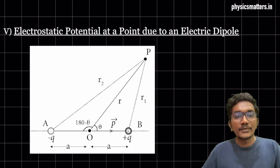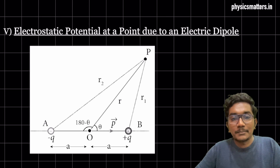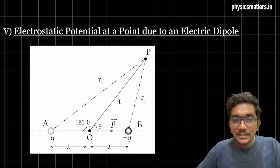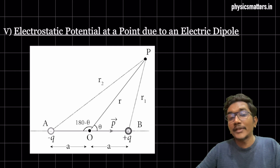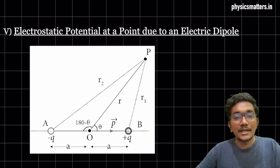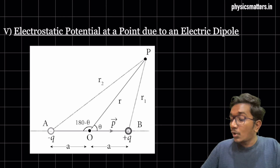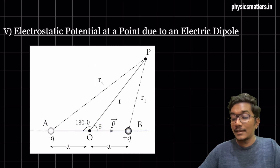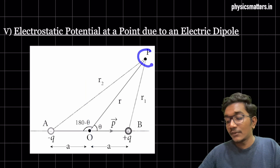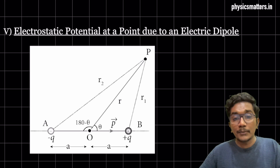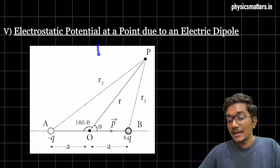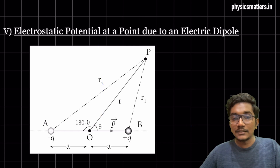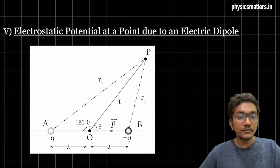Hello everyone. Now we are going to do the electrostatic potential at a point due to an electric dipole. We already discussed the electric fields and torque, and now we are going to do electric potential or electrostatic potential at a point due to an electric dipole. We are not going to do the electric potential along axial or equatorial line first. We will first find the value at a random point, then consider it for axial as well as equatorial.